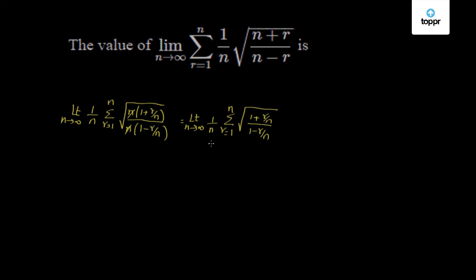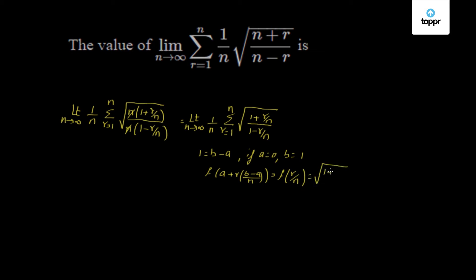Based on this, we have 1 as (b minus a). If a equals 0 and b equals 1, then the expression f(a + r·(b minus a)/n) changes to f(r/n). So the function f(r/n) is square root of (1 plus r/n) by (1 minus r/n). This implies f(x) is square root of (1 plus x) by (1 minus x).